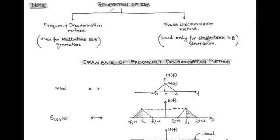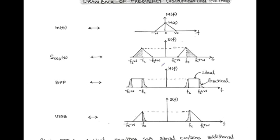We have discussed two methods for the generation of single sideband or SSB: the frequency discrimination method (filter method) and the phase discrimination method. There is a key difference between them. The frequency discrimination method is used for multi-tone SSB generation, meaning more than one modulating signal with multiple frequencies can be used. But the phase discrimination method is used only for single-tone SSB generation. Additionally, the filter method has a drawback, which we will discuss graphically.